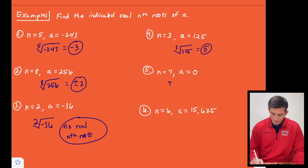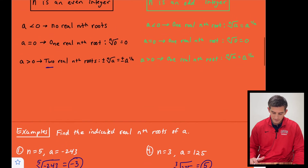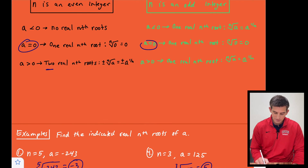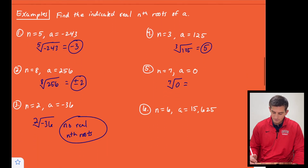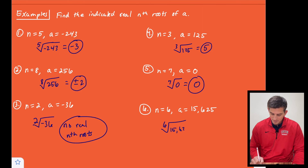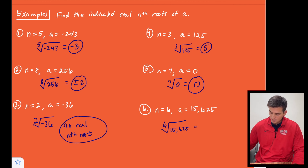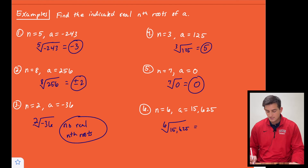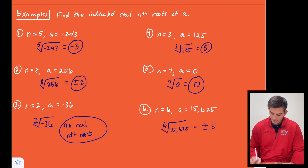Number five: we're going to do the seventh root of zero. Anytime we take a root of zero, our one real nth root is just zero. Number six: we're going to take the sixth root of 15,625. That gives us five, but since we have an even index, we say positive or negative five.